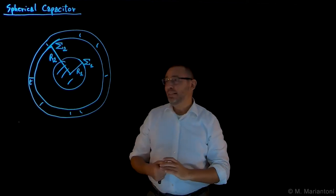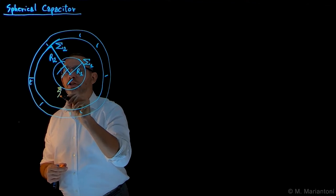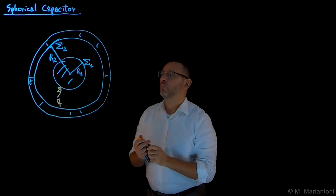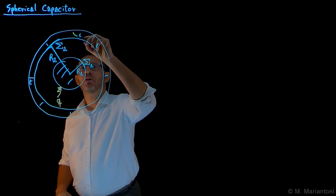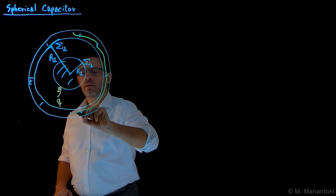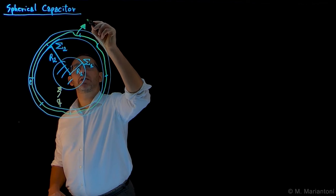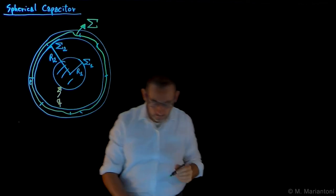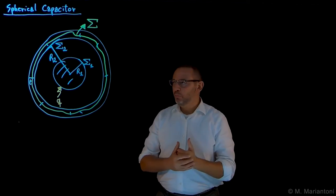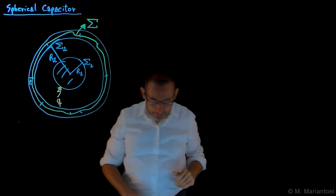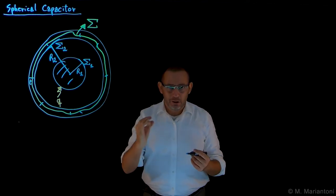Let's hypothesize that we charge the inner hard sphere by means of a charge plus Q. Now if we consider a Gaussian surface capital sigma which is closed and entirely contained within the thickness of the conducting shell, we want to find what the charges are everywhere else in this system. To do so, we need to impose the two conditions of total electrostatic induction.